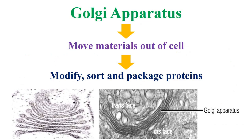Golgi apparatus moves materials out of the cell by using its tubes, to modify, sort, and package proteins.